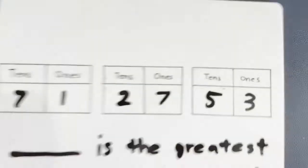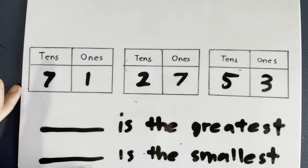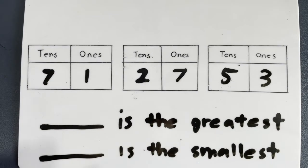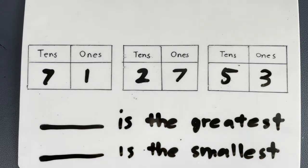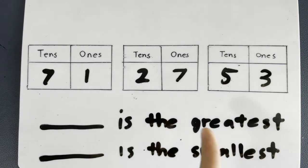I have three numbers for you here, and you are going to tell me which one is the greatest and which one is the smallest. First number is 71, second number 27, third number 53. So tell me, which is the greatest?